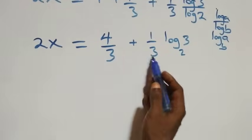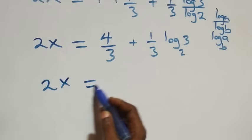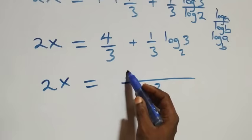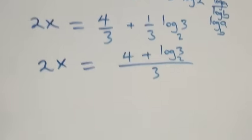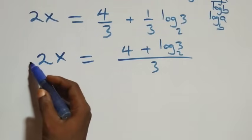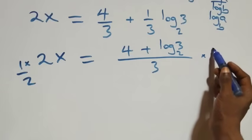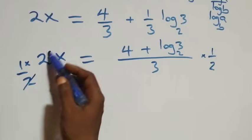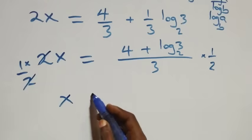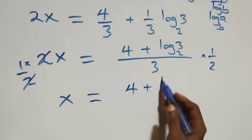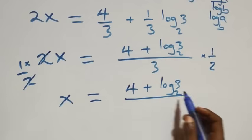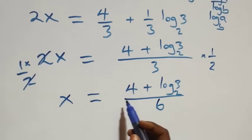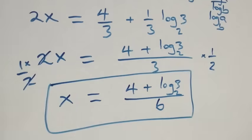Combining into one fraction with denominator 3: 2x equals (4 + log 3 base 2) over 3. Multiplying both sides by 1/2, the 2 cancels, giving x equals (4 + log 3 base 2) divided by 6. So the value of x is (4 + log₂3) all over 6.